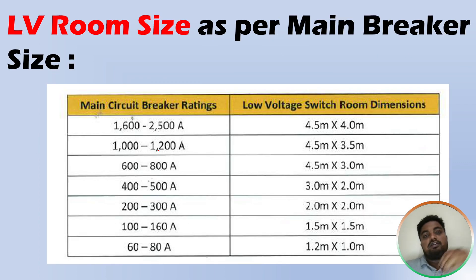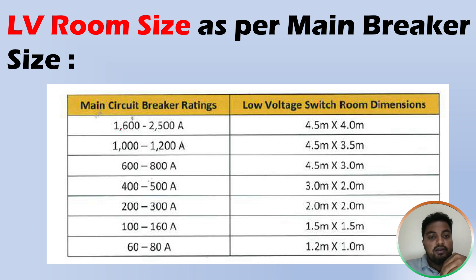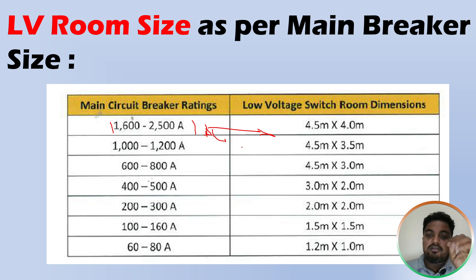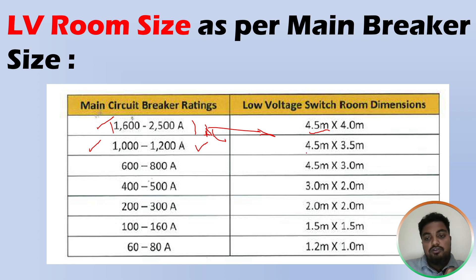Now we will see the LV room size as per the main breaker. This is applicable when you have one LV panel in the LV room. The first column is the main circuit breaker rating and the second column is the low-voltage switchroom dimensions. For a 1600A to 2500A ACB incoming, the minimum room size to allocate is 4.5m × 4m. For a 1000A to 1200A ACB incoming, the minimum room size is 4.5m × 3.5m.